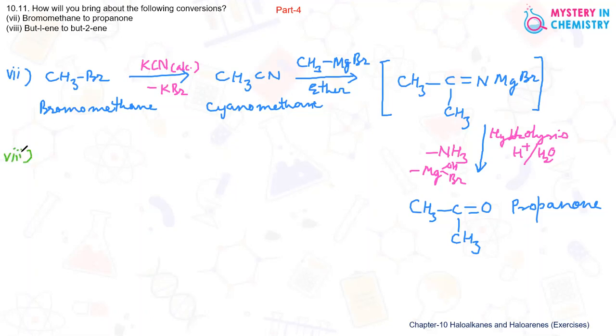And here but-1-ene is converted to but-2-ene. So this compound is CH3 single bond CH2 single bond CH2 then CH double bond CH2. This is but-1-ene.